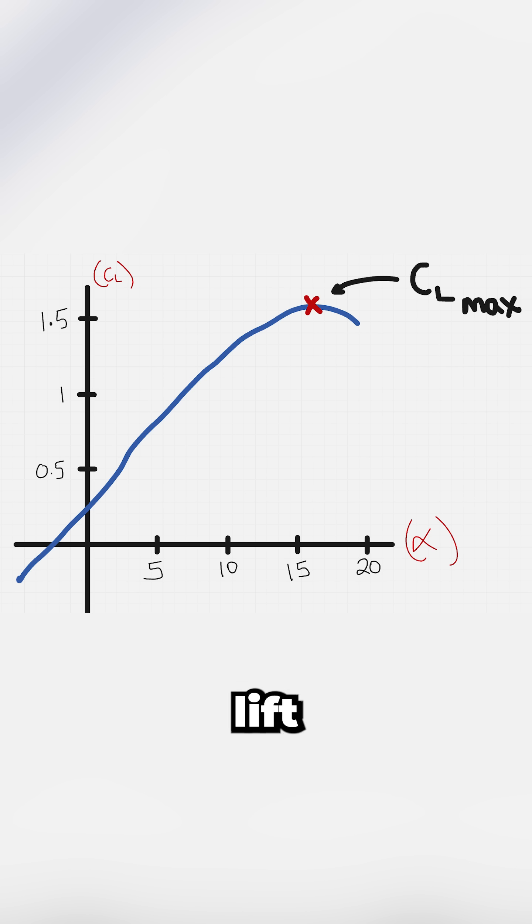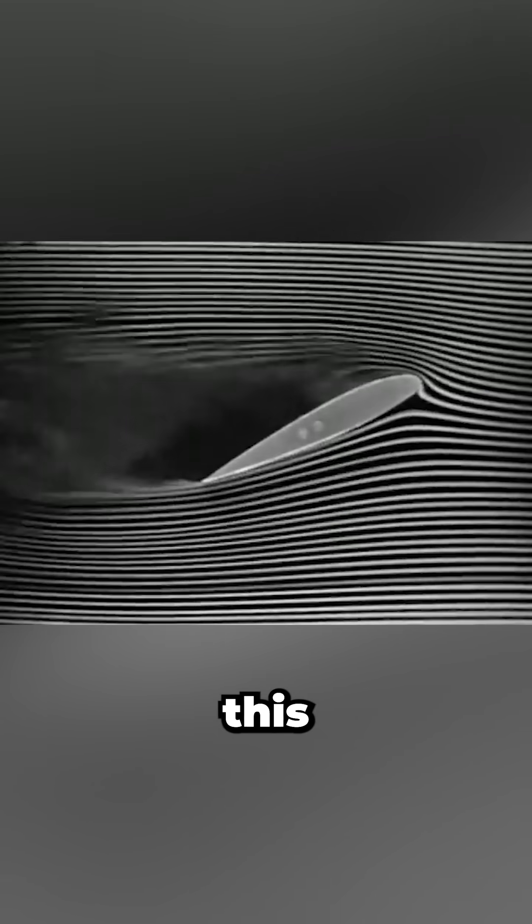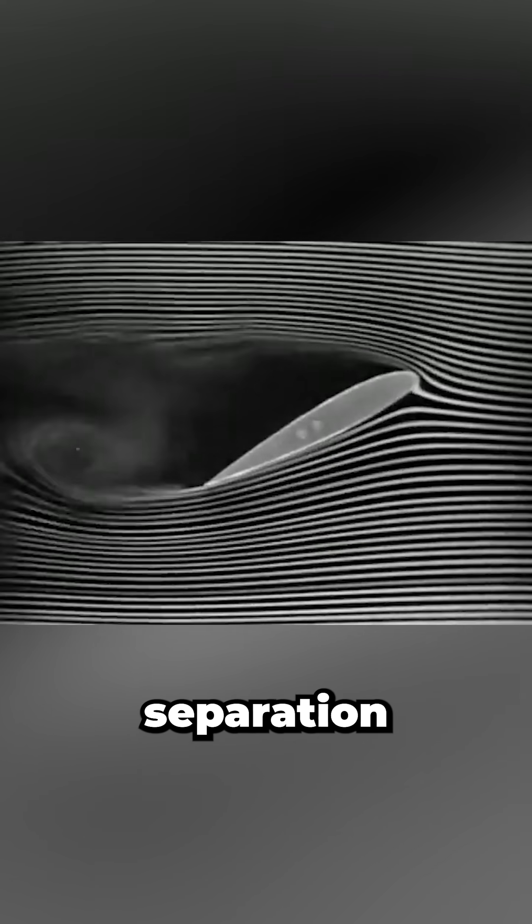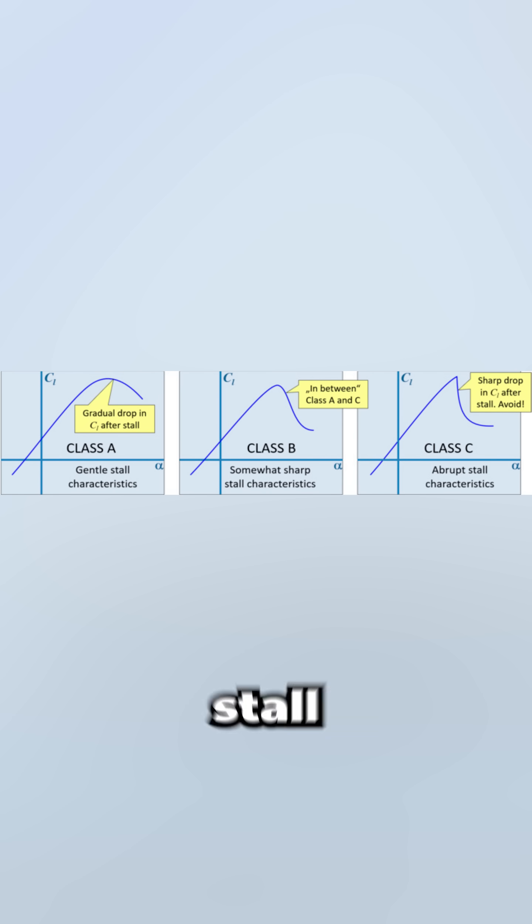but there's a peak where the maximum lift coefficient sits, and pushing beyond this angle causes dominant airflow separation over the wing's upper surface, triggering stall and a sharp, sudden, or gentle reduction in lift.